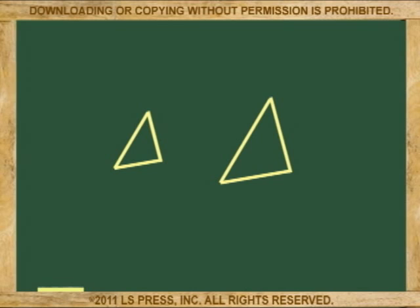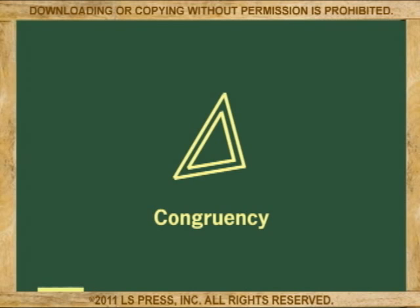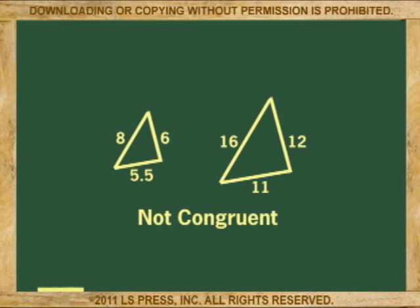Now let's take two triangles. This section is really about comparing triangles and how do you know when triangles match? First of all, matching triangles is called congruency, and the term congruency is reserved for a special type of equality. It is equality in measurement and form. These two triangles are equal in form, but not in measurement, so they are not congruent.